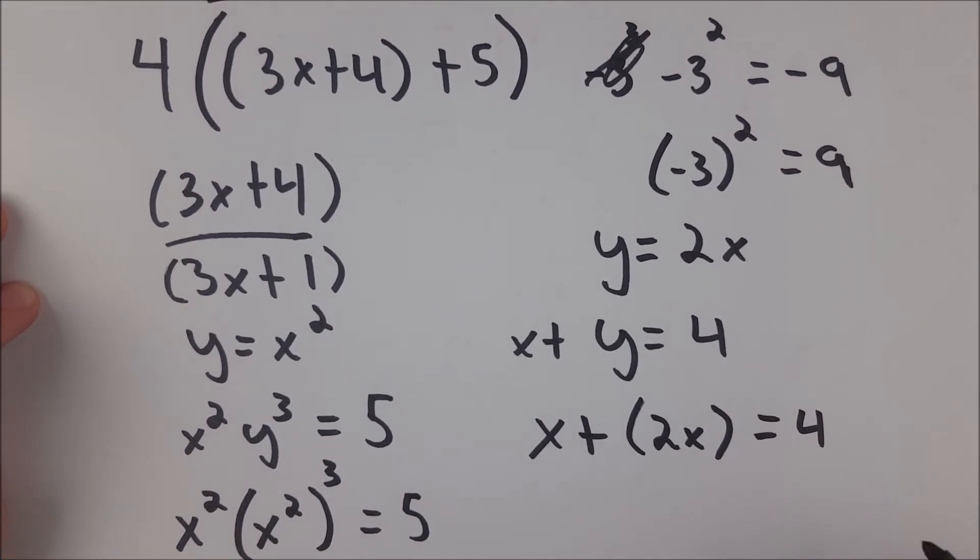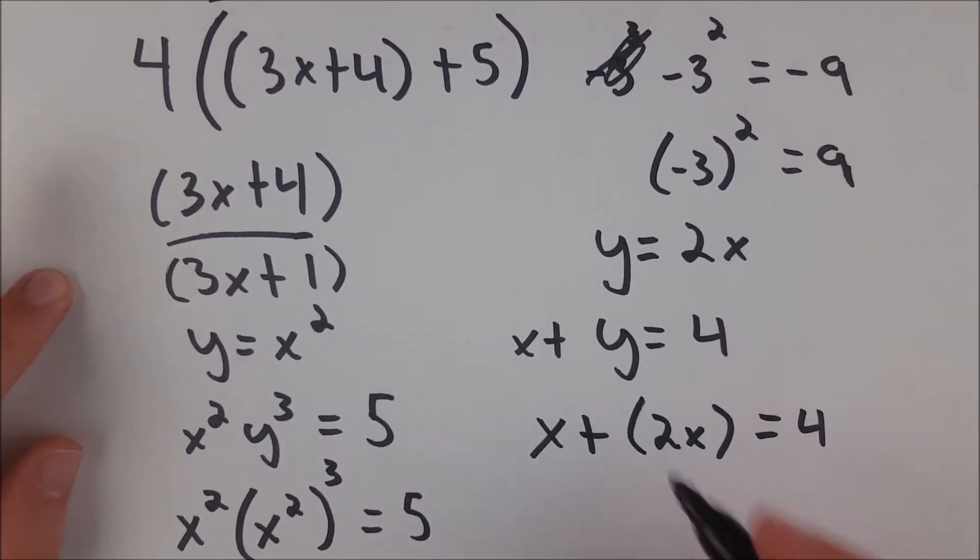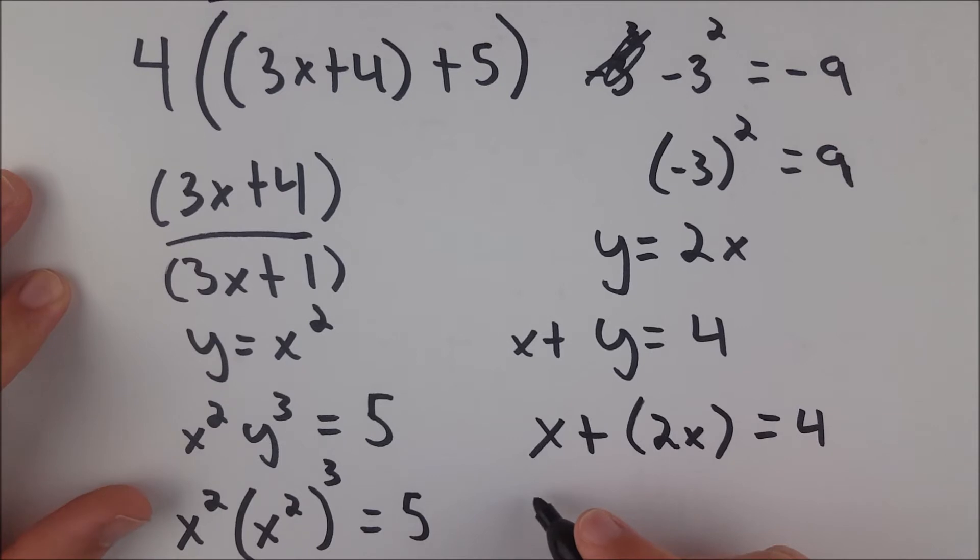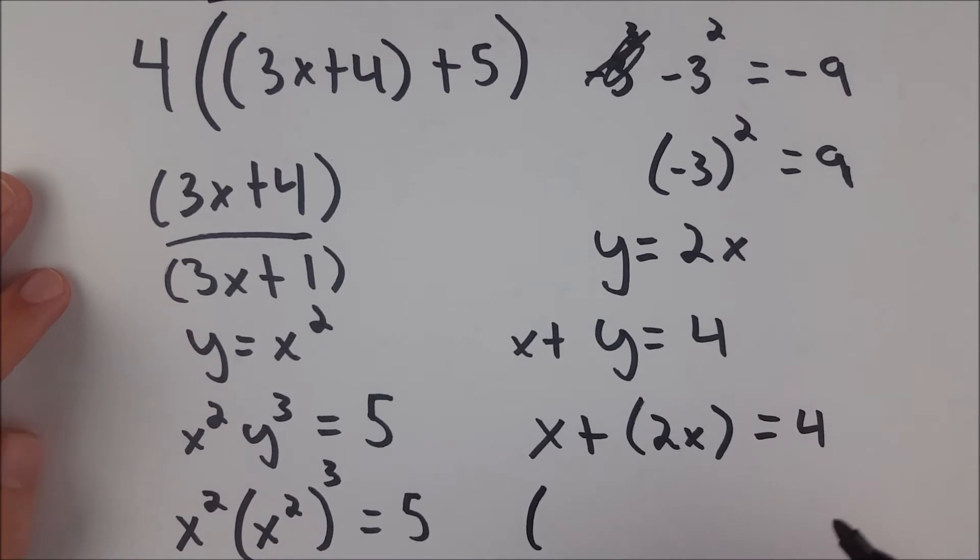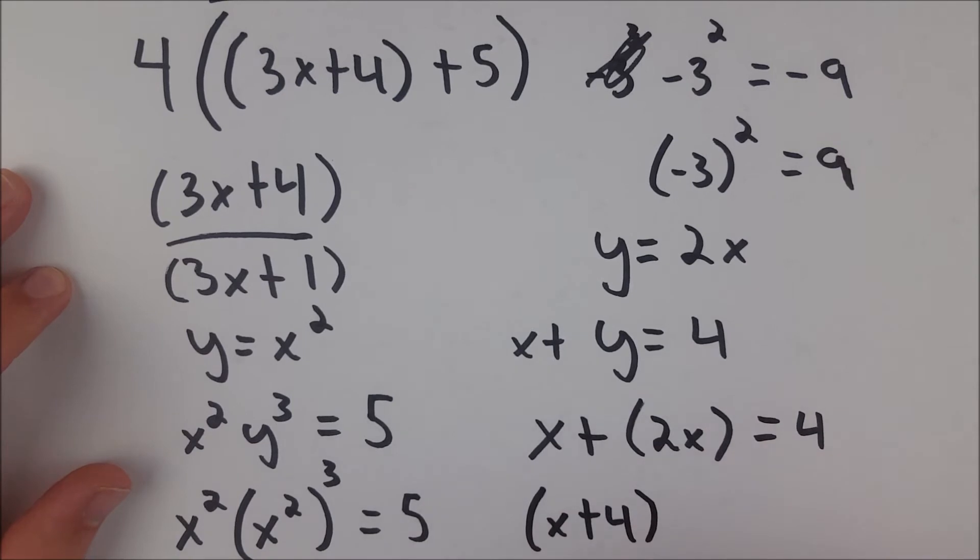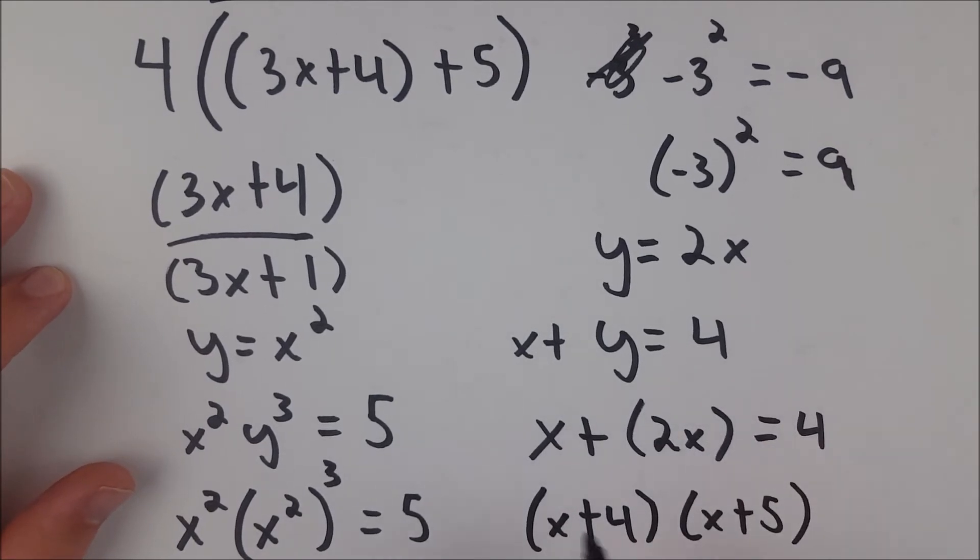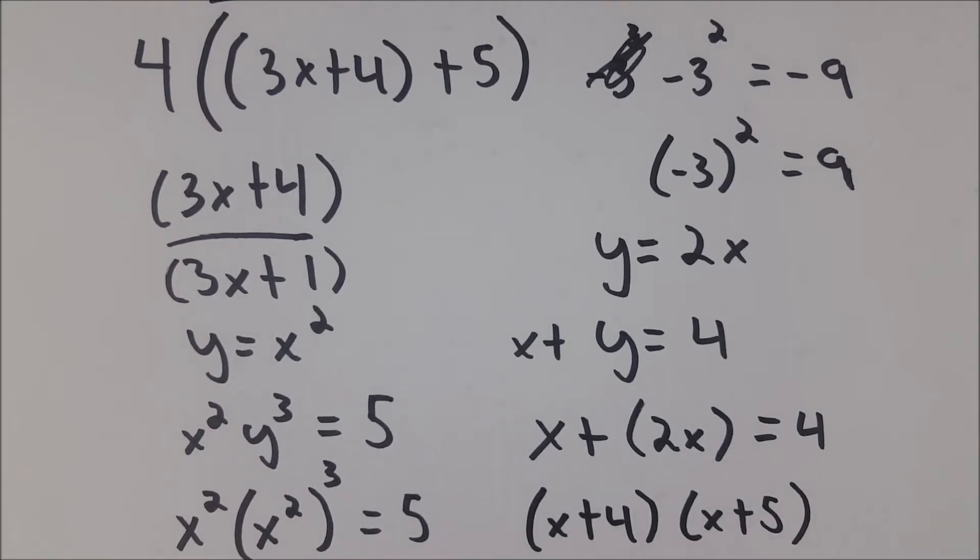Parentheses are also handy for communicating multiplication. There's really no other way to multiply polynomials together. So if I wanted to multiply x plus 4 times x plus 5, I'd need to put them both in parentheses and sit them side by side, and that makes the multiplication very clear.